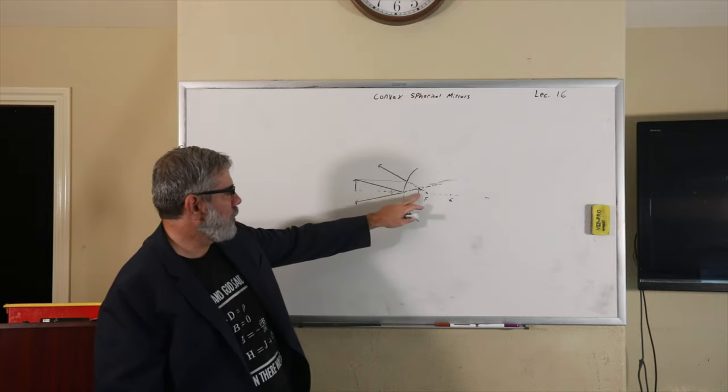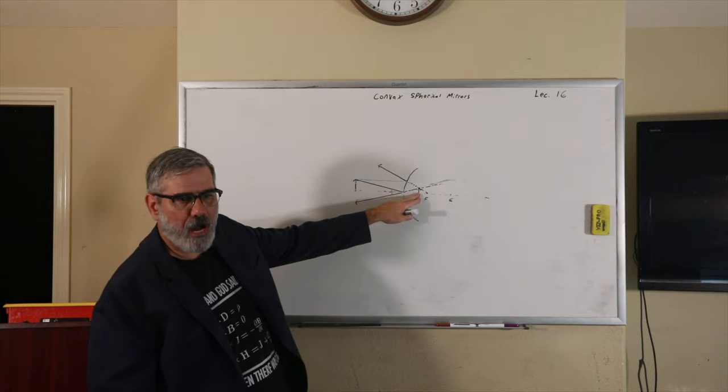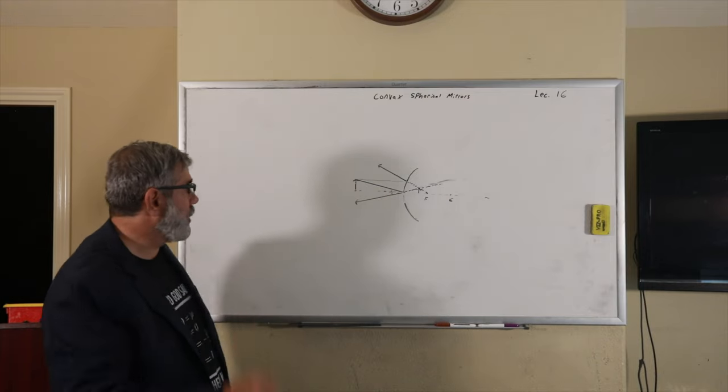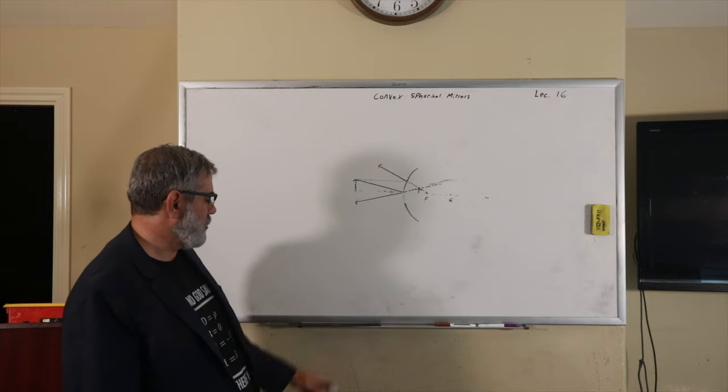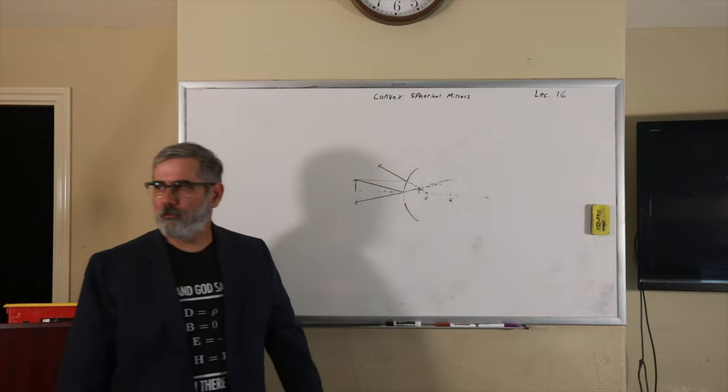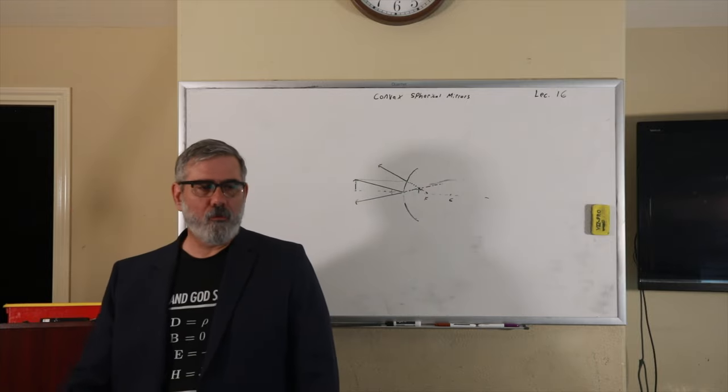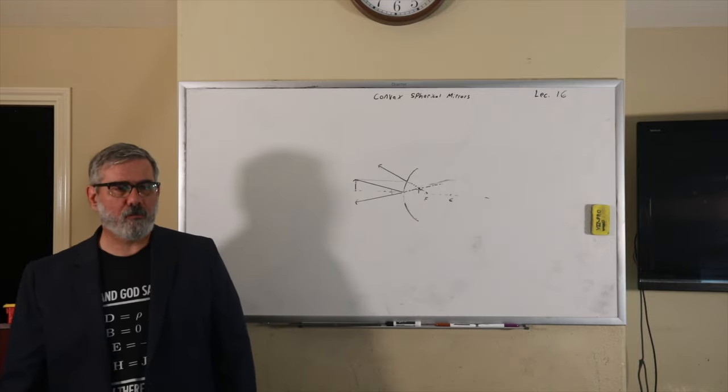The image is virtual, which means it's behind the mirror, or appears to be behind the mirror. And that's it. That's all I'm going to say about convex spherical mirrors. Next we'll derive or show the relationship between the focus and the radius of curvature.